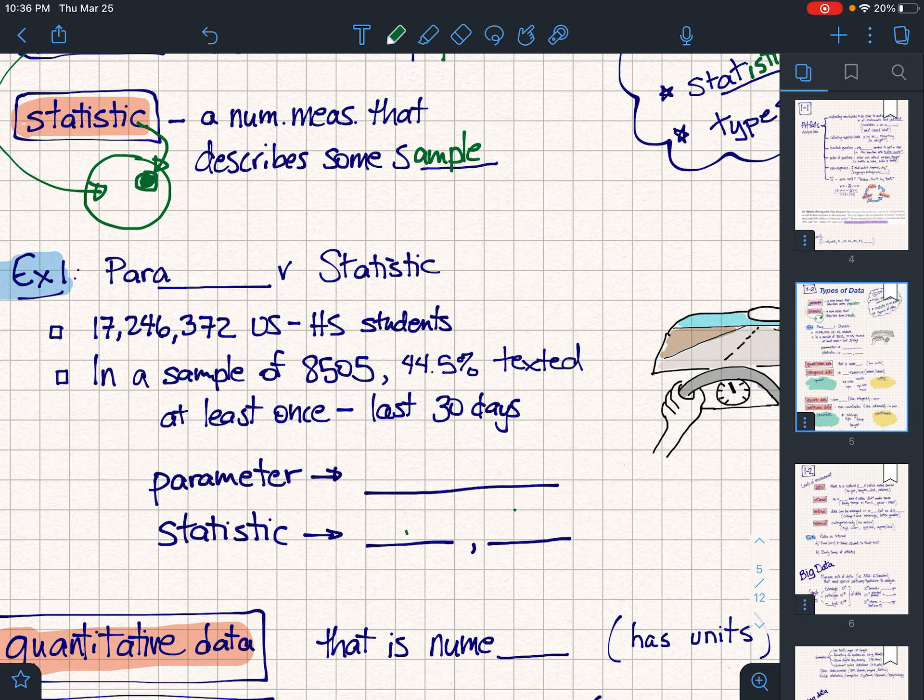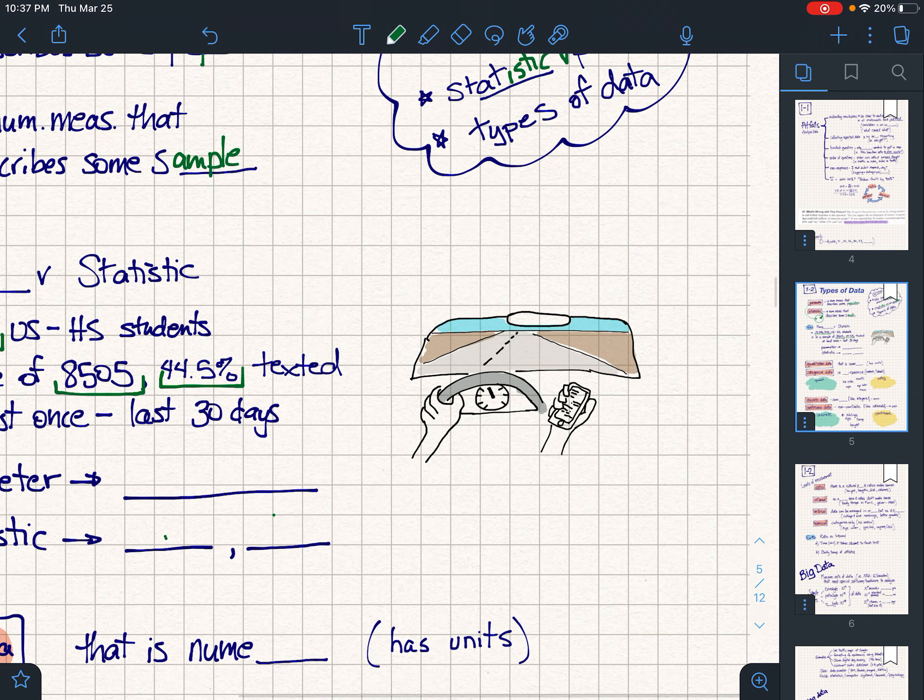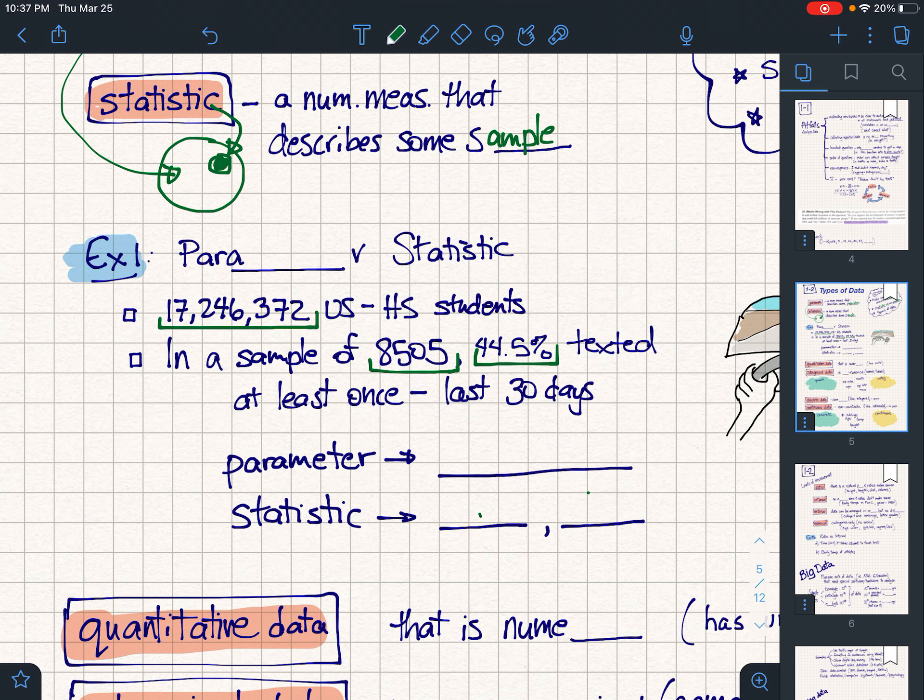Most of the time you're gonna be dealing with statistics. That's why the class is called statistics. Here we have a parameter for US high school students. We sampled 8,505 and 44.5% of them texted while driving during the last 30 days. Is this a parameter or a statistic? Well, obviously since we just sampled a bit of them, 44.5% is the statistic, and this group that it applies to, 8,505, is the sample.